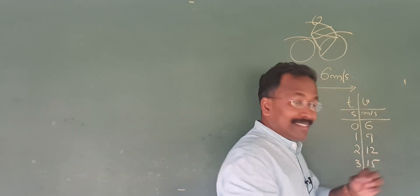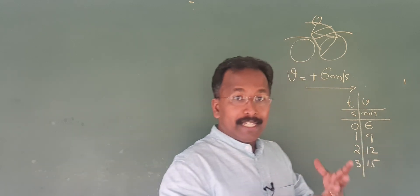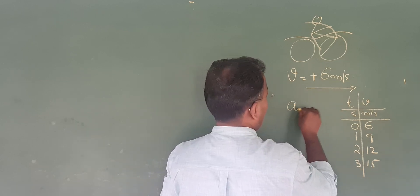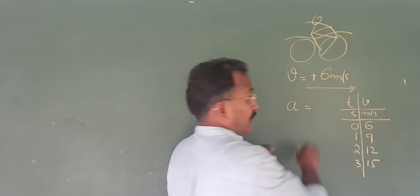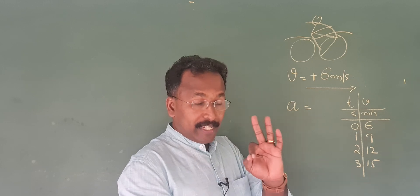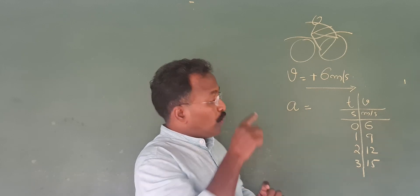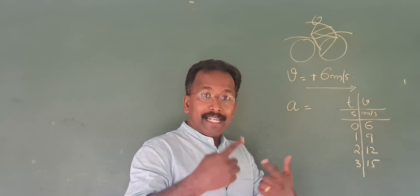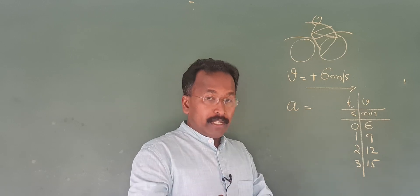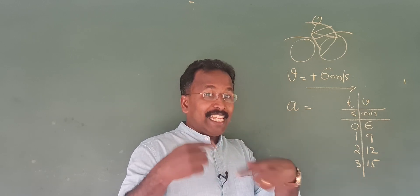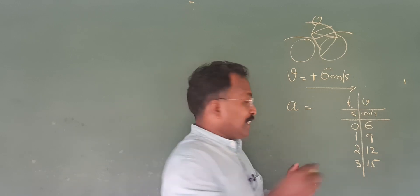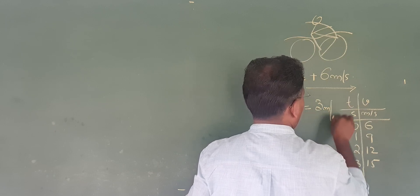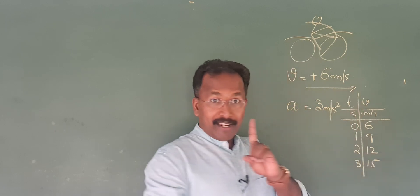In every step, I added 3 meters per second. That means acceleration — what is it? In every second, it is 3 meters per second. That is 3 meters per second in every second, so we say it is 3 meters per second squared.